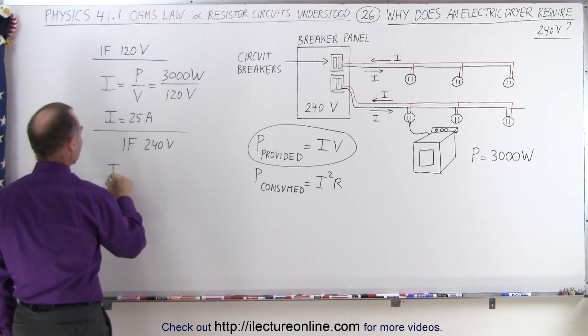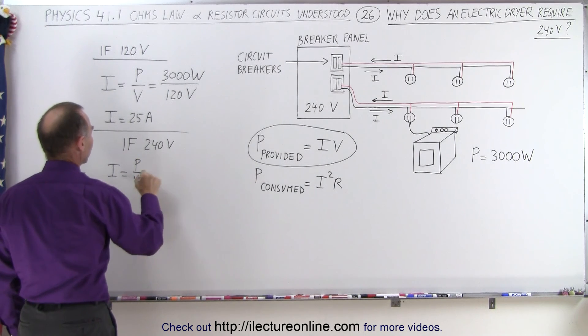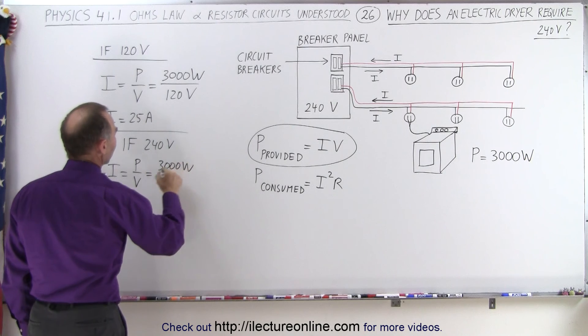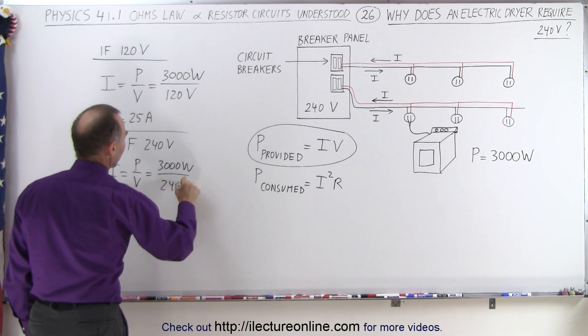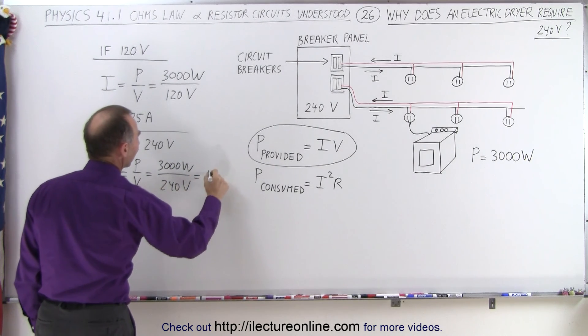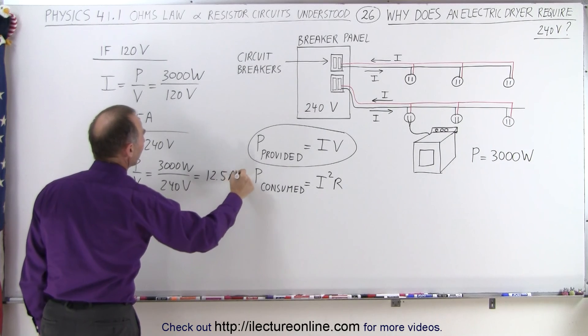Well, if we now use 240 volts, notice that will reduce the current required to run the dryer. I being equal to the power divided by the voltage, which is 3000 watts divided by 240 volts. Well, double the voltage means half the current - you'd only need 12.5 amps.